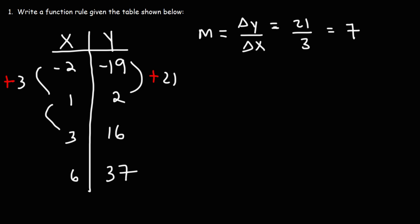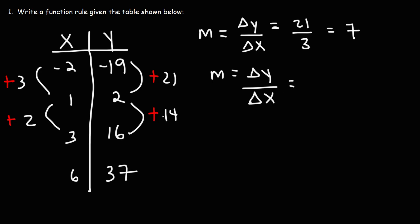Let's check with the next pair of points. Going from x equals 1 to x equals 3, that's a change of positive 2. Going from y equals 2 to y equals 16, that's an increase of positive 14. So the slope is 14 over 2, which is also 7. We have a constant slope, which confirms we're dealing with a linear function — a straight line.